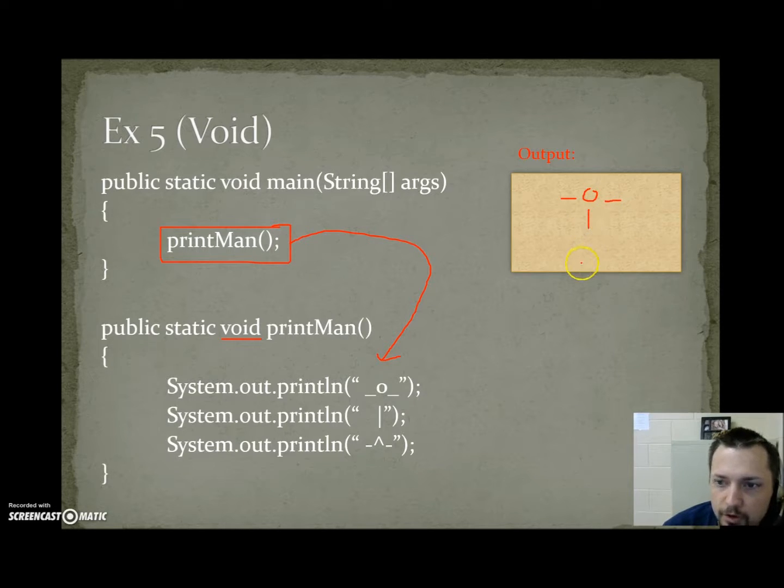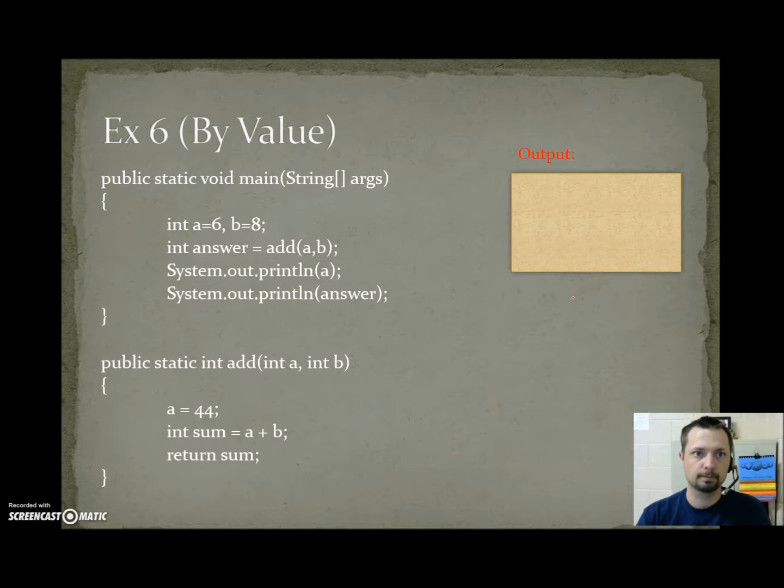Then we print a vertical bar on another line. And then, on the last line, we print some feet with a caret and two minus signs. Once this method completes, we go back to main right here. Here, there is no code after printman, and the program finishes out.